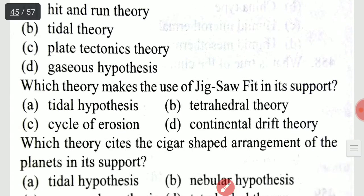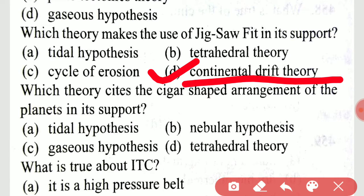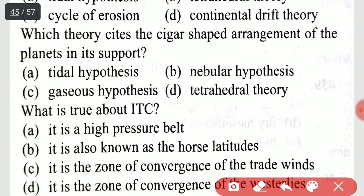Which theory makes use of jigsaw fit in its support? It is option D, continental drift theory. Which theory is option A? That is the tidal hypothesis.